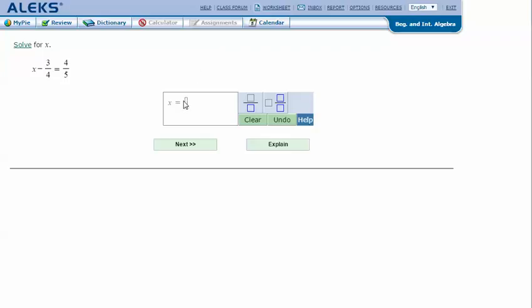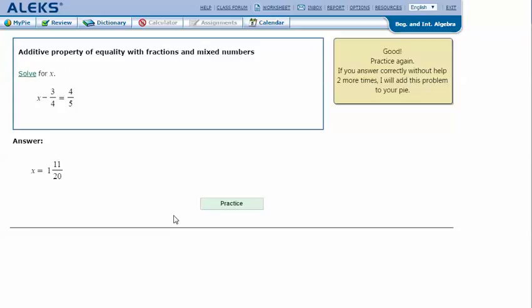In my ALEKS screen, type in the answer that I got in my notes. One and eleven-twentieths. Click next. It says that I got the correct answer. Thanks for watching.